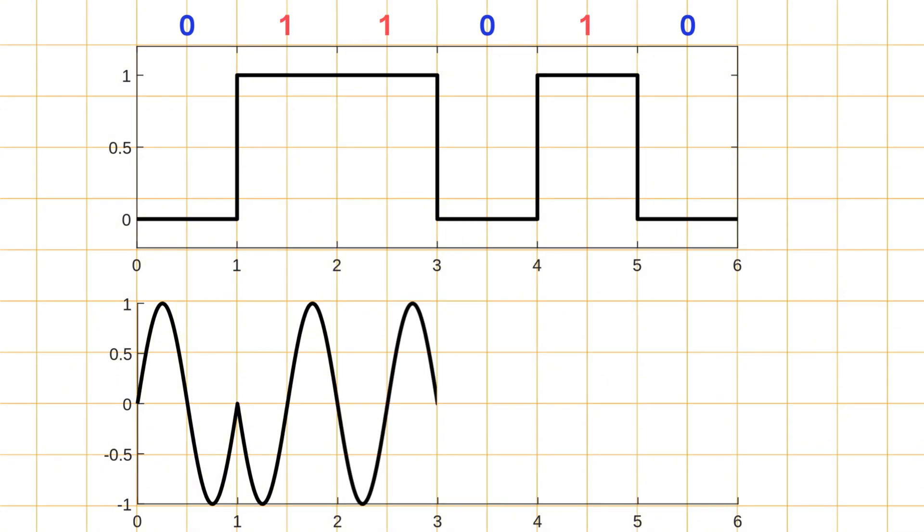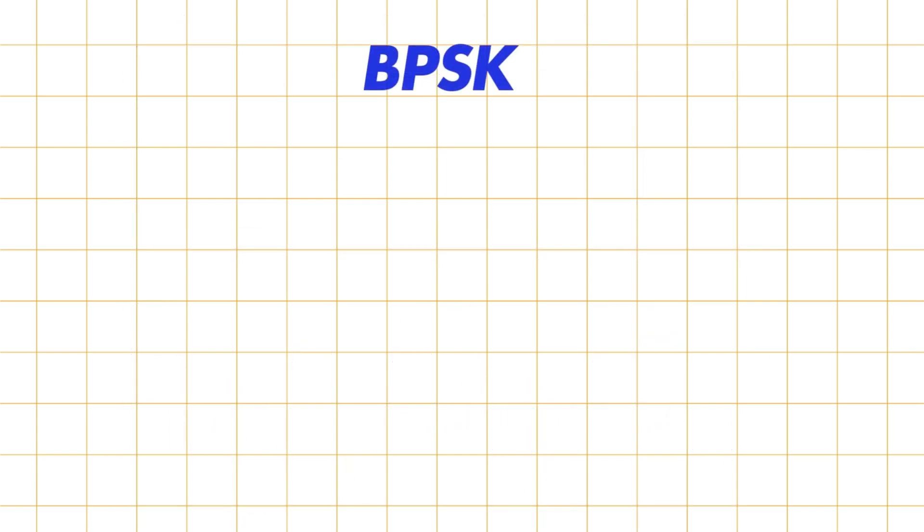But as soon as the signal switches back to 0, the phase shifts again. The process continues throughout the entire signal, with phase changes occurring only when the data transitions from 0 to 1 or 1 to 0. This specific type of PSK is known as binary phase shift keying, BPSK.